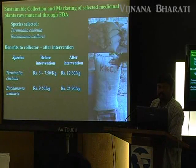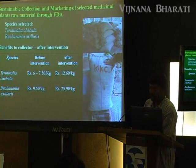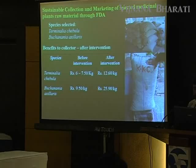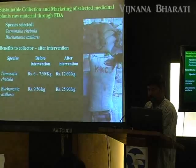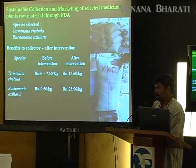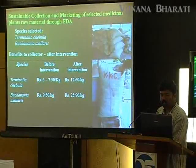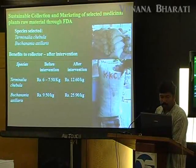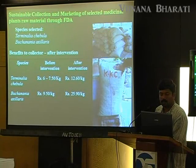We have also taken up sustainable collection along with marketing. Marketing is very important — when you give better benefits to the community, conservation outcomes also improve. For Terminalia chebula and Buchanania lanzan, working along with the forest department in Tumkur: earlier the local collection rate for Terminalia chebula was 6 to 7 rupees, but after FDA, village forest committee, and FLST intervention, they now get 12 rupees 60 paisa. For Buchanania lanzan, the rate was only 9 rupees 50 paisa, and now they are getting more than 25 rupees. This is sold directly to Andhra Pradesh, and chebula was sold to Kerala Aushadi last year.